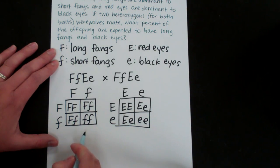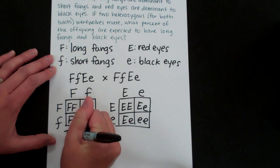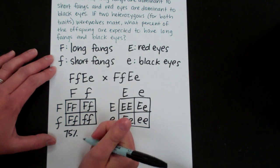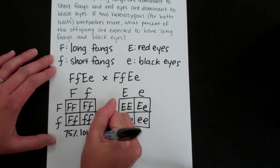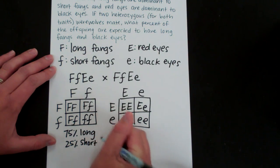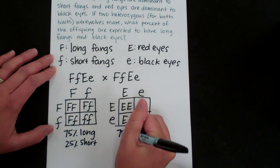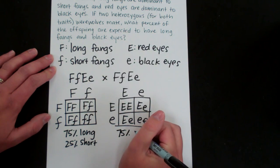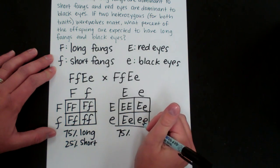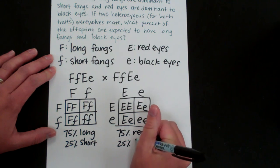So if you look at this Punnett square here it looks that 75% of the werewolf offspring would have long fangs and 25% would have short fangs, because only 25% are homozygous recessive. And then 75% would have red eyes and 25% would have black eyes.